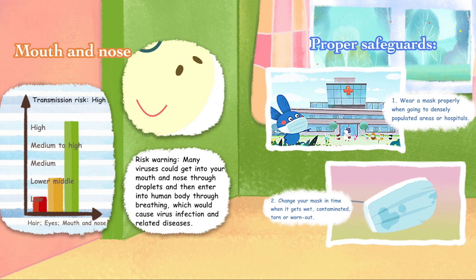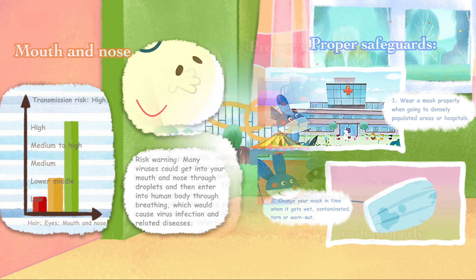Mouth and Nose — Risk Warning: Many viruses can get into your mouth and nose through droplets and enter the human body through breathing, causing virus infection and related diseases. Proper safeguards: (1) wear a mask properly when going to densely populated areas or hospitals, and (2) change your mask in time when it gets wet, contaminated, torn, or worn out.